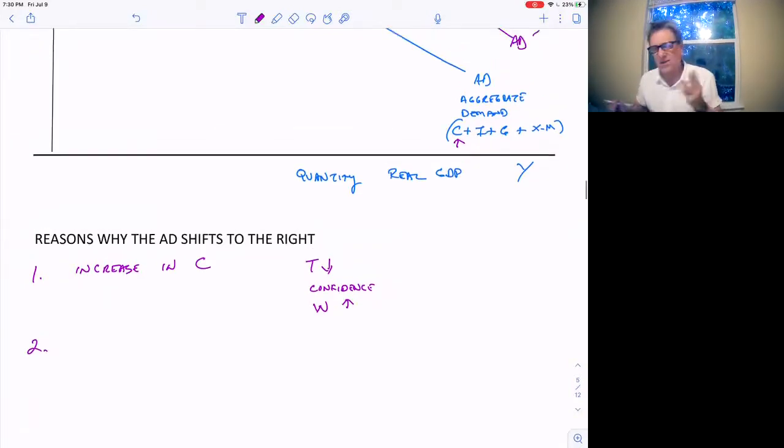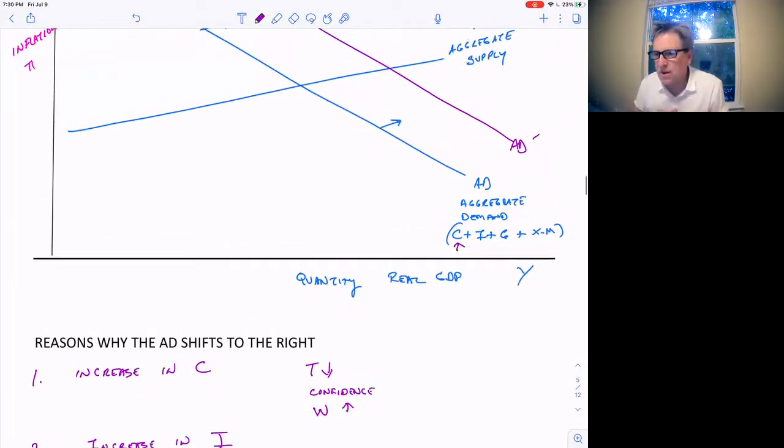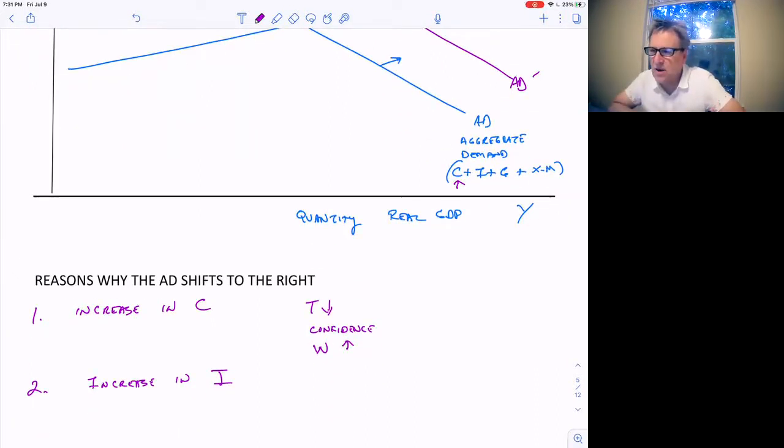What else? I'll give you a hint. There's four things here that would make aggregate demand curve shift to the right. Four categories. And we've gone through all of them already. So what's the next one? An increase in C. Increase in I. Investment spending. That goes up. Aggregate demand curve shifts to the right. What's going to make investment spending go up? And remember one of the big categories of investment spending is new homes. What would make people go out and start buying new homes? Confidence. An increase in confidence in the economy. Keynes referred to that as animal spirits. Which now we would just refer to as increase in confidence.